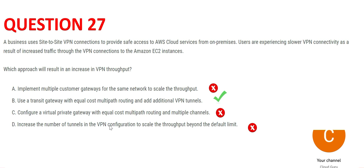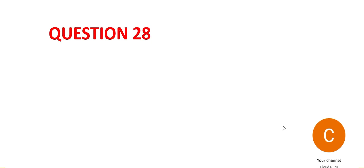Transit Gateway connects different VPCs as a network and gives you more control. Once you use Transit Gateway with additional VPNs, you are all set. If you just increase the number of tunnels without Transit Gateway, you face the same problem again and have to keep increasing tunnels iteratively. Use the better option — B — which is a combination of Transit Gateway and additional VPN tunnels. Let's look at question 28.